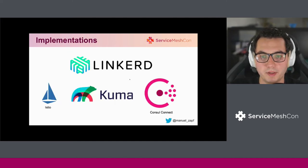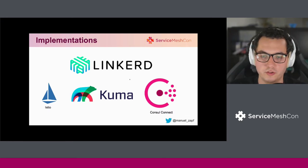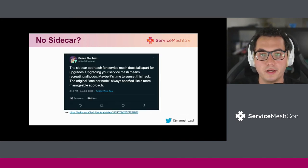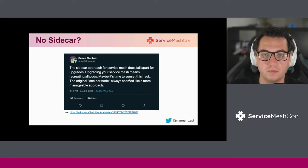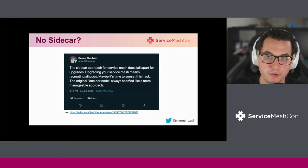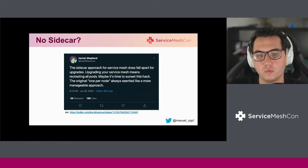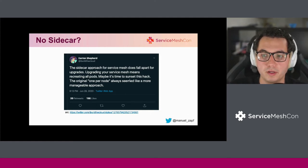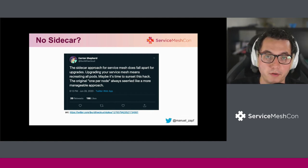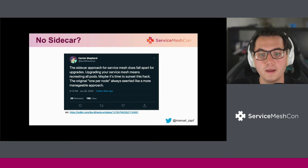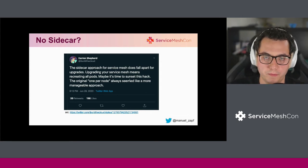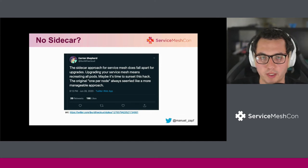Most well-known implementations of this architecture are, of course, Linkerd2, Istio, Kuma, and Consul Connect, just to name the biggest ones. However, recently in the ecosystem there has been questioning around whether the sidecar approach is still a viable option or not. There is a quote from Darren Shepard questioning the sidecar approach, and whether there might be better alternatives — meaning the original one-per-node approach — which is another architecture we will now take a quick look at.